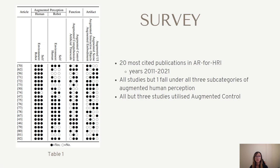Using our taxonomy, we categorize the 20 most cited publications in AR for HRI between the years 2011 to 2021. As shown in table one, all studies but one fall under all three subcategories of augmented human perception. This suggests that high importance is placed on the augmentation of human perception, which is as expected as AR technologies are primarily used to aid the human experience. The range of human perception augmentations therefore tends to be more well researched than that of the robot.